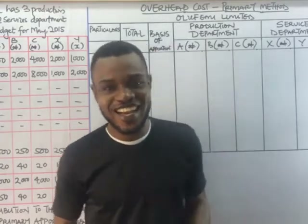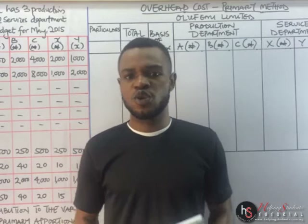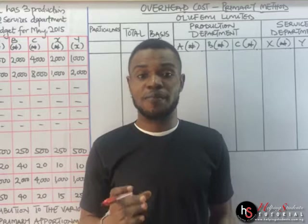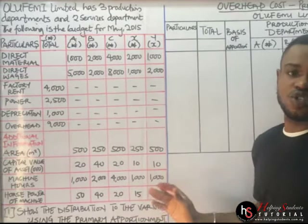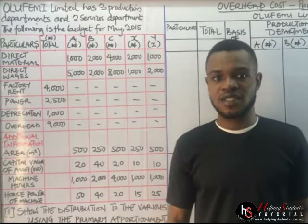Hello and good day — hope you've had a great time. In the previous video we looked into the introductory aspect of overhead costing and the basis of apportionment. It is very, very important because without an idea of the basis of apportionment, you cannot treat any question under the primary method. So the basis of apportionment is very important — you only need it to treat the primary method.